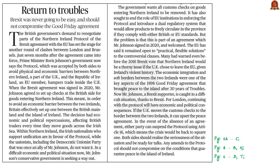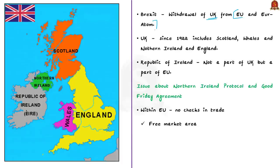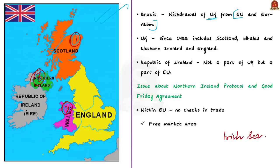Our next discussion is based on an editorial about the Northern Ireland issue — a continuing event Britain faces after Brexit. Brexit is the withdrawal of the United Kingdom from the European Union and from Euratom, the European Atomic Energy Community. UK is not monolithic — it includes Scotland, Wales, and Northern Ireland. The island of Ireland is where the Republic of Ireland is situated, an independent country not part of the United Kingdom. The British mainland and Ireland are separated by the Irish Sea. The Republic of Ireland is still part of the European Union but not part of the United Kingdom.